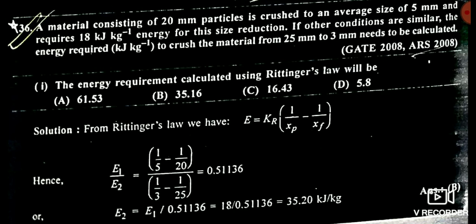Now see another question based on Rittinger's law. Here also you make two cases. In Case 1, feed diameter is 20 mm, product diameter is 5 mm, and energy used is 18 kilojoule per kg. In Case 2, feed diameter is 25 mm and product diameter is 3 mm, and it is asking about the energy used. Simply take the ratio of Case 1 and Case 2. The answer is 35.20.